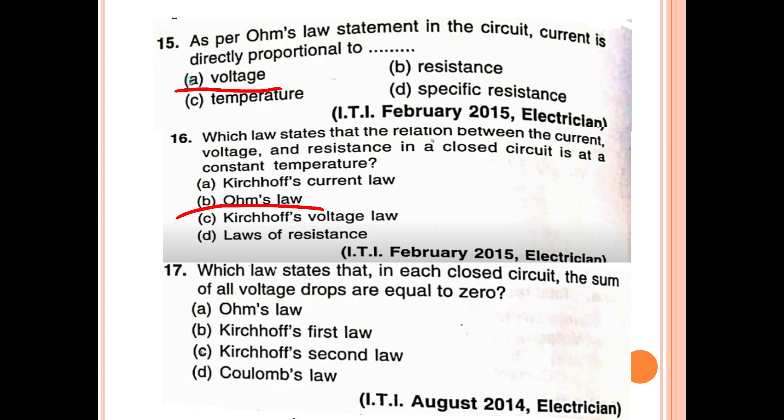Which law states that in each closed circuit the sum of all voltage drops is equal to zero? In a closed circuit, if the sum of all voltage drops equals zero, the answer is Kirchhoff's Voltage Law. The answer is C.